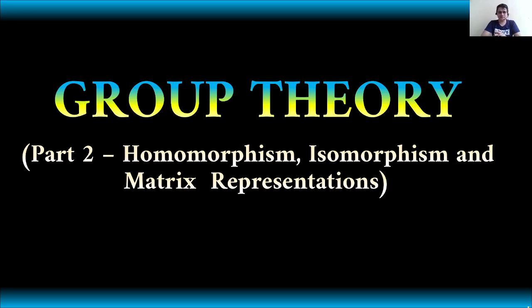Now, today we will be discussing part two, which is the homomorphism, isomorphism, and matrix representations of the group. Basically, as we know, if we have two groups or more than one group, for example, this is group number one, and we have here group number two. And as we know, there are elements of the group, or there are members of the group.